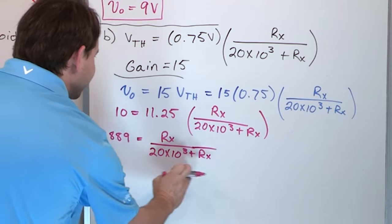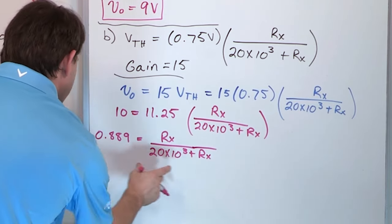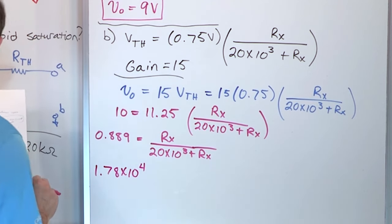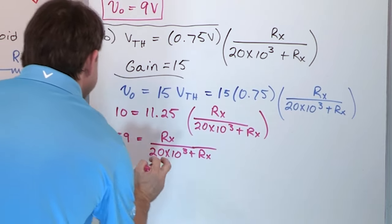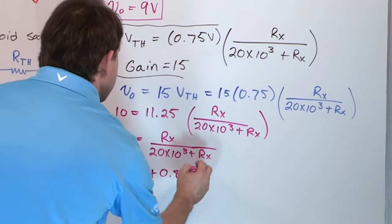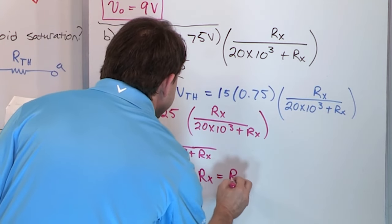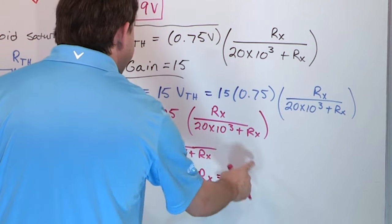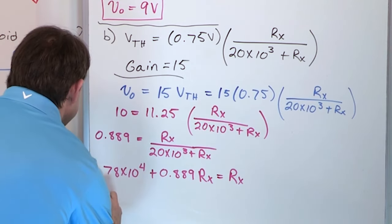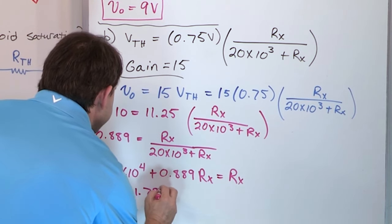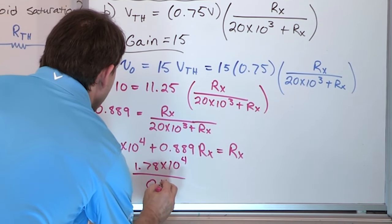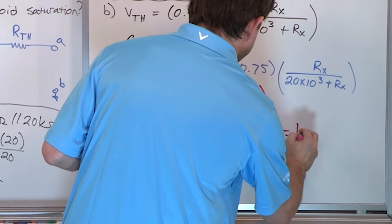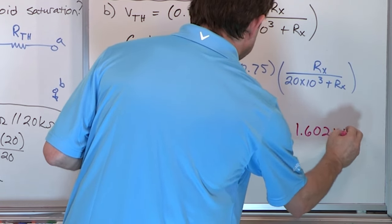To isolate R_X, multiply both sides by the denominator (20 × 10³ + R_X). That gives 0.889 × (20 × 10³) + 0.889 × R_X = R_X, which means 1.78 × 10⁴ + 0.889 R_X = R_X. Subtracting 0.889 R_X from both sides leaves 1.78 × 10⁴ = 0.111 R_X. Dividing gives R_X = 1.78 × 10⁴ / 0.111 = 1.602 × 10⁵ ohms, which is approximately 160 kilohms.